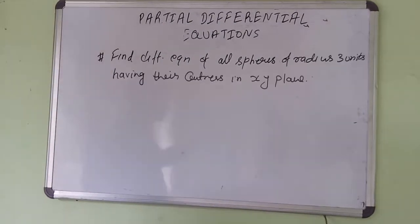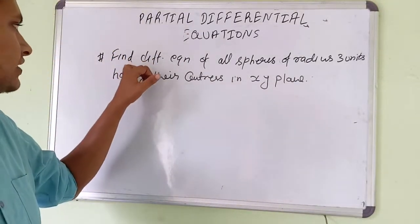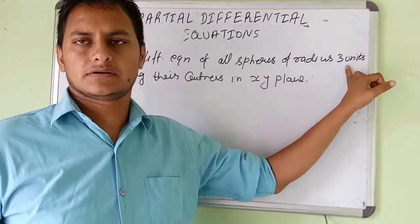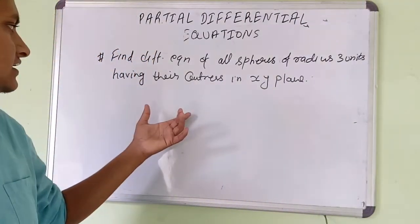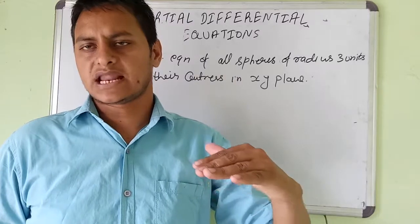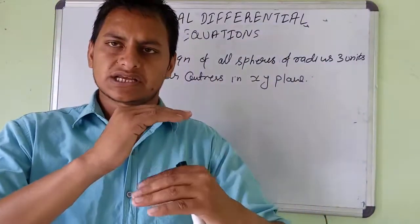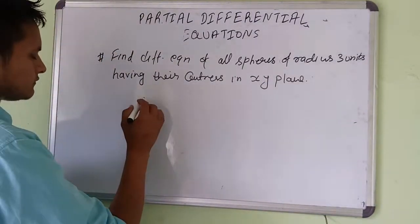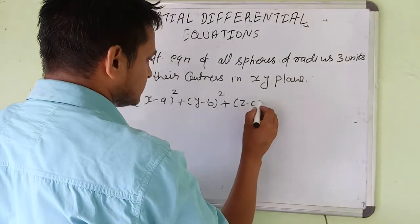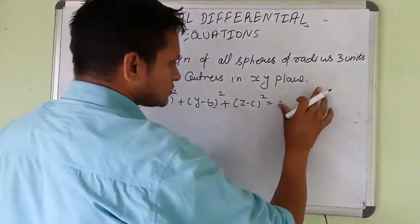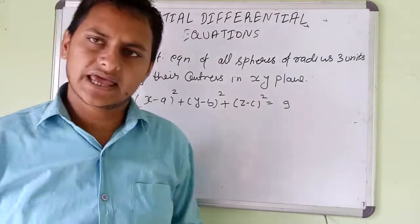Now we take another problem. Find the differential equation of all spheres of radius 3 units having their centers in the xy-plane. If the center lies on the xy-plane, then the value in the z-direction is zero. So the equation is (x-a)² + (y-b)² + (z-c)² = r² and since radius is 3 units, r² = 9.